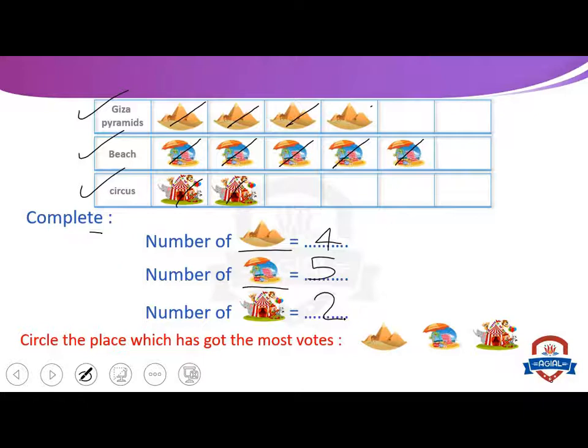Circle the place which has got the most votes. Which one has the most votes? Where is the biggest number? Four, five, and two. The biggest number is five, so beach has the most votes. Circle the beach.